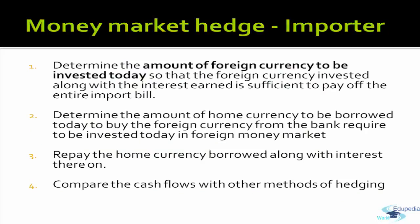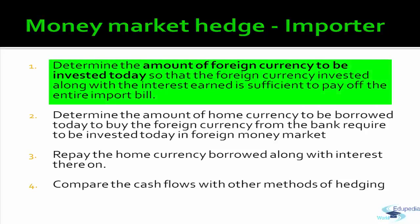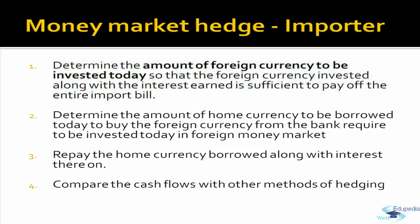For an importer, a money market hedge can be used by determining the amount of foreign currency to be invested today, so that the proceeds — the invested amount plus interest — are sufficient to make the full payment of the import bill at maturity. The importer first computes how much to invest today, such that the investment plus interest receivable equals the payment due. The investment period equals the credit period offered by the foreign party.